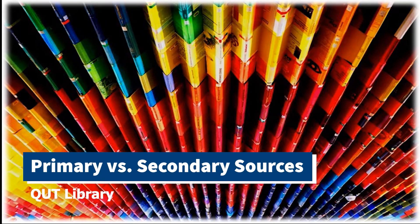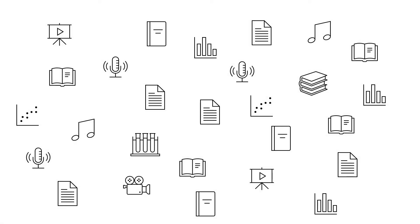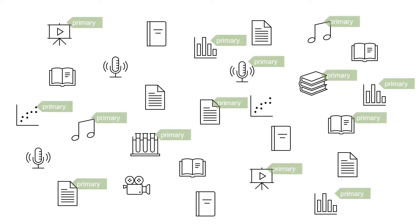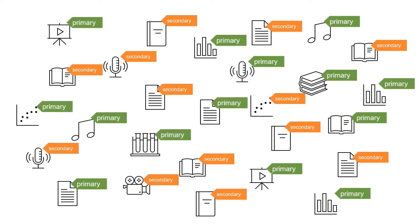Primary vs Secondary Sources. Before you start looking for information for your assignment, it helps to know what kinds of information are available. One of the main differences between types of information is the difference between information from a primary source versus information from a secondary source.